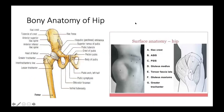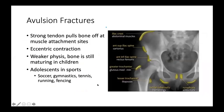There are bony prominences you can palpate when examining a patient. Starting from the top of the pelvis, you have the iliac crest, the anterior superior iliac spine or ASIS at the front, and the posterior superior iliac spine or PSIS at the back. You can also feel the greater trochanter on the lateral side of the hip. These important attachment sites can be involved in avulsion fractures, where a strong tendon pulls a bony attachment off due to an eccentric contraction while the physis is weak.